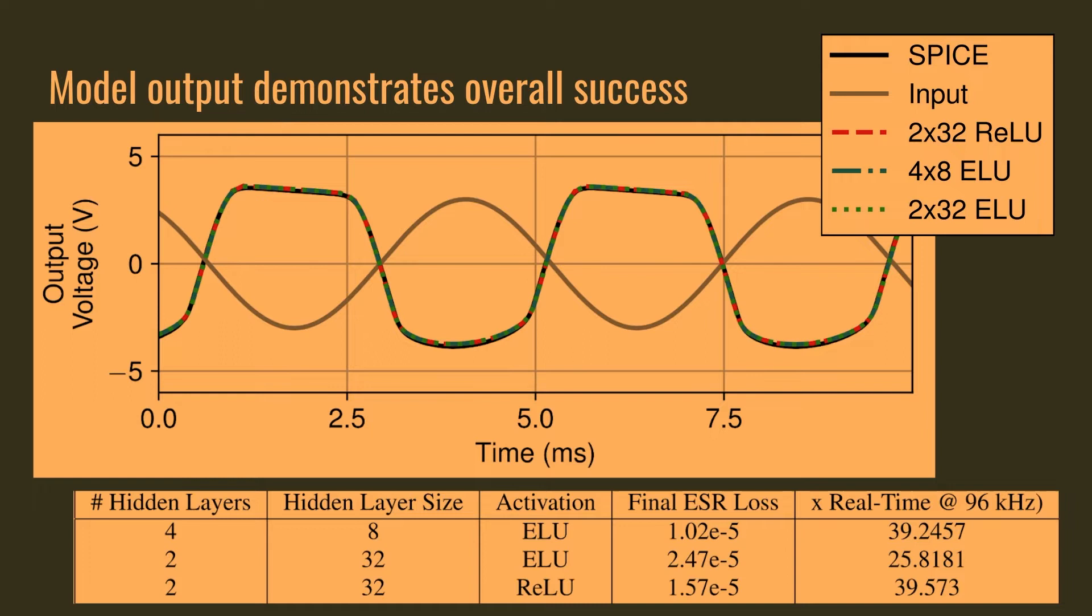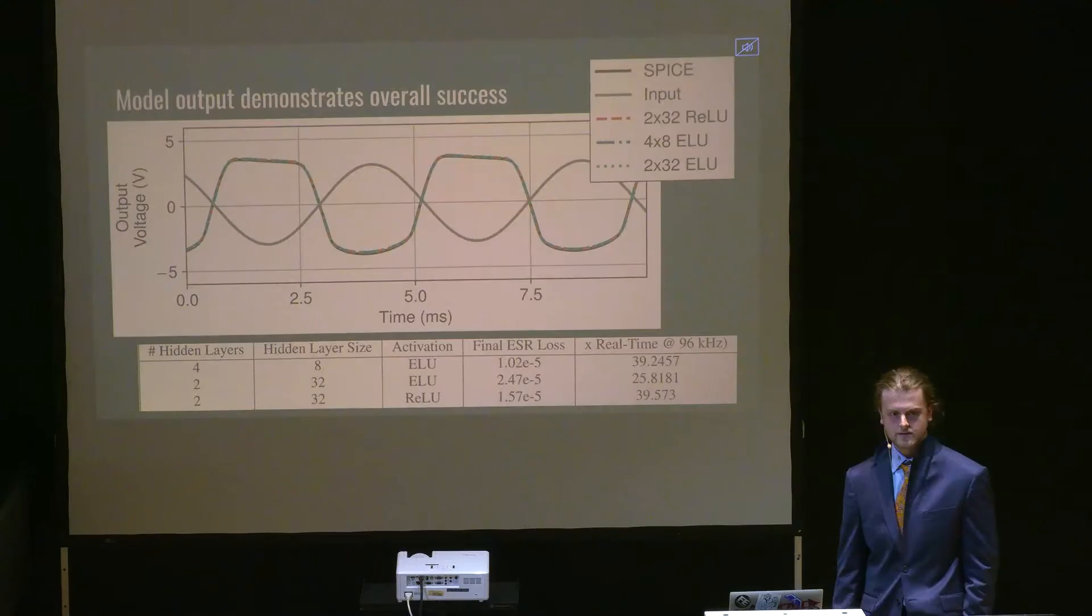Furthermore, when we insert it into the model itself, we demonstrate pretty good overall success, where you can see for all three nets that we've trained, we see very close adherence to an expected output based on the input. We have SPICE in black behind it, and they're pretty much nearly overlapping, which is wonderful. And we can also see that these nets are running really quickly relative to real time. Even at 96 kilohertz, we're getting 40 times real time, so we could easily do four times oversampling even at 96 and still see excellent performance.